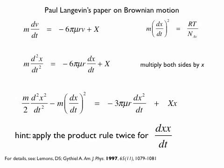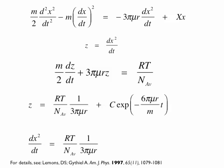I'll go through it first, and then we'll have a little break — you can try it out and see if you can do it. Starting from the top equation after multiplying by x, he introduced a parameter z, where z is defined as d(x²)/dt, which gets close to the mean square displacement. If you replace d(x²)/dt by z, you get: m over 2 times dz/dt plus 3 times pi times the viscosity times the radius times z.